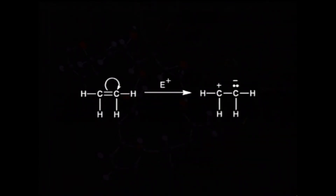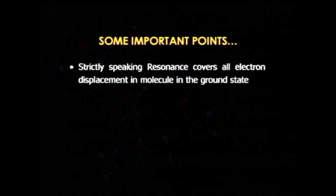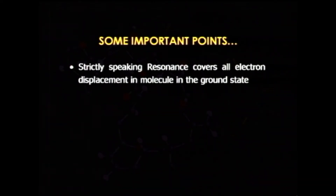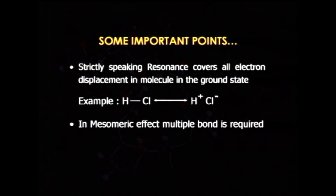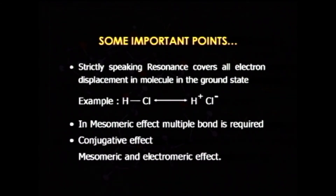With the line diagram of ethylene we can see the same thing. An important point is that strictly speaking, resonance covers all electron displacement in a molecule in the ground state — for example, dissociation of hydrogen chloride into H⁺ and Cl⁻. In the case of mesomeric effect, the presence of a multiple bond is essential. Mesomeric effect and electromeric effect together are considered under conjugative effects because they are studied in conjugated systems such as 1,3-butadiene, benzene, and all aromatic compounds.